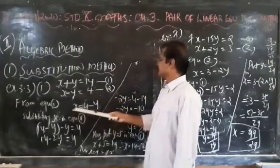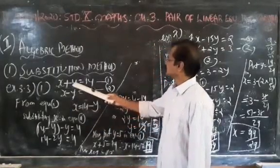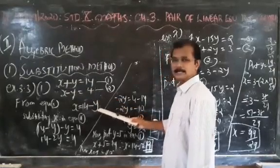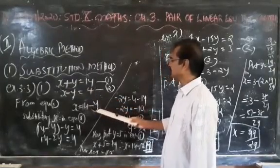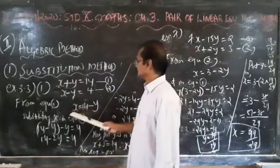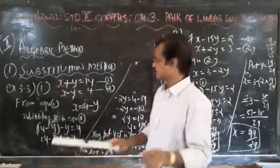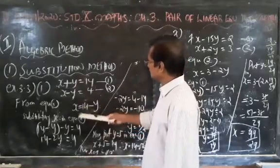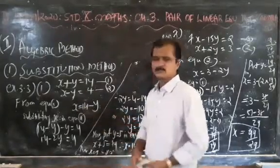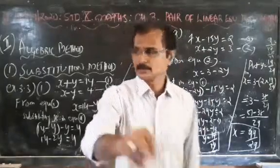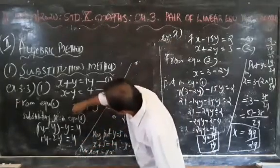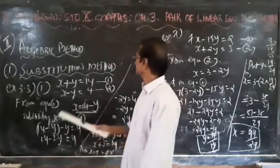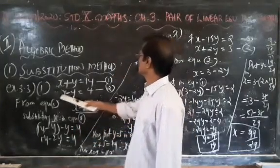From equation number 1, we take x plus y equal to 14 and bring y to the right side, so x equal to 14 minus y. Now we put this value x equal to 14 minus y into equation number 2.